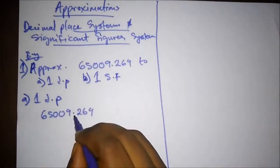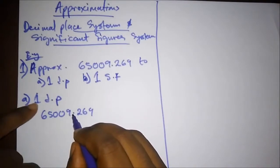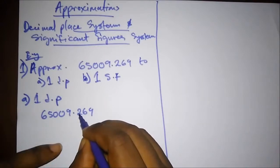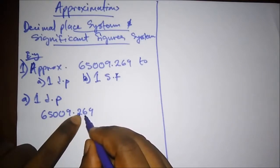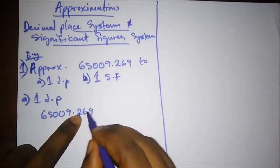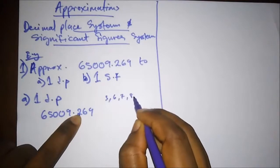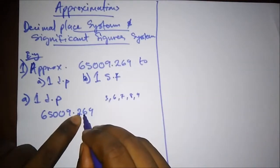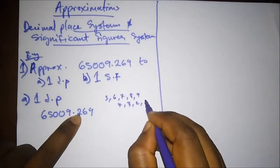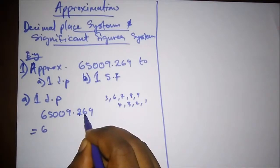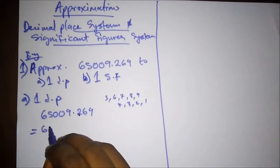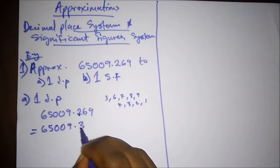We start counting from our decimal point. Since this is one decimal place, we count one figure — that's the digit 2. The next number after that one decimal place position is 6. We check if we can round up or round down. To round up, the number must be 5, 6, 7, 8, or 9. If it falls between 0 and 4, we round down. Since the next digit is 6, we round up — we add one to the 2, making it 3. So our answer to one decimal place is 65009.3.